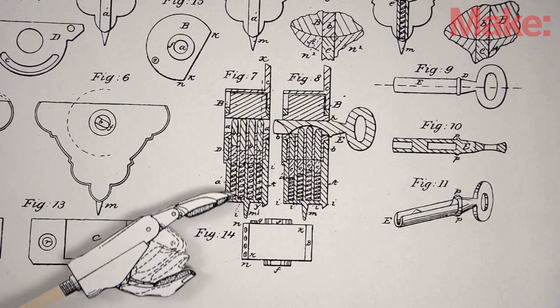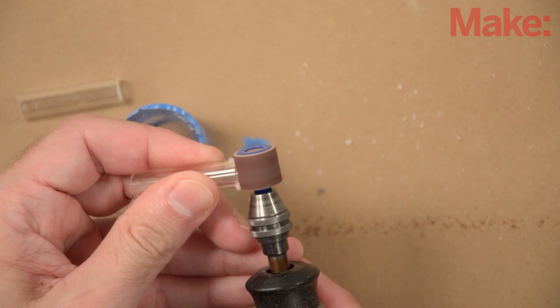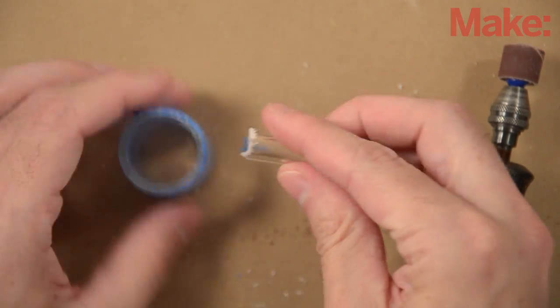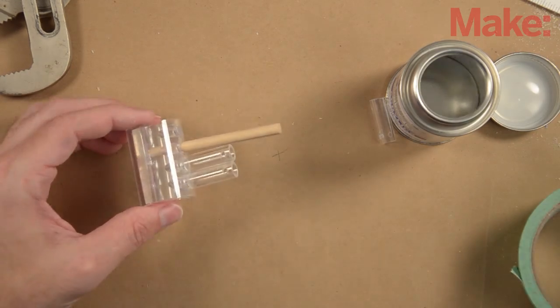Pin chambers hold the other half of the pins and springs to push them against the key. I make them from smaller tubes that are shaped to match the curve of the shell and attached with acrylic glue.